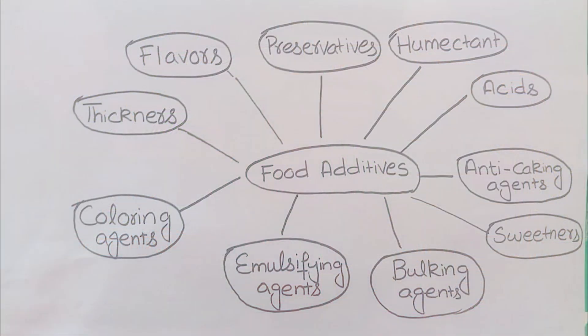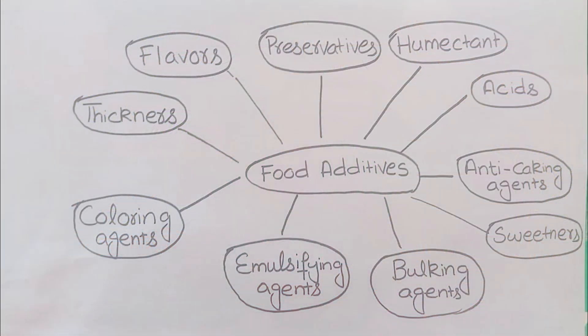For example, xanthan gum and different gums are thickeners — xanthan gum is an important name. After this we will look at Flavors. Flavors are added to food to improve its quality. Food quality improves depending on the flavor added — chocolate, strawberry, maple, cinnamon — all kinds of flavors can be added.